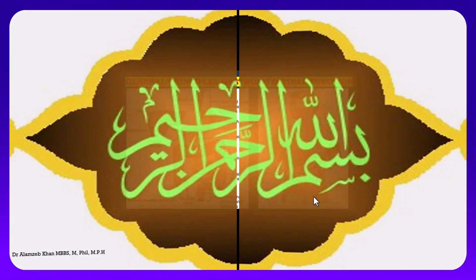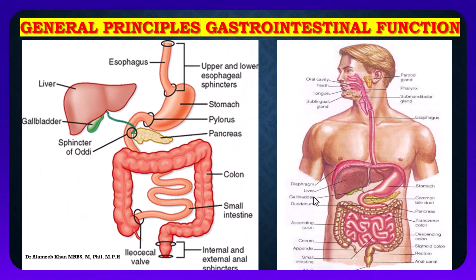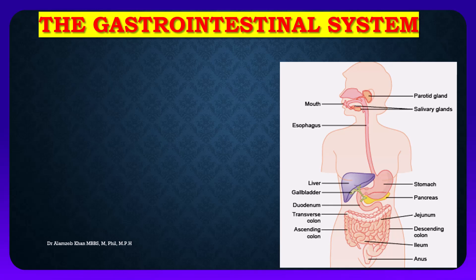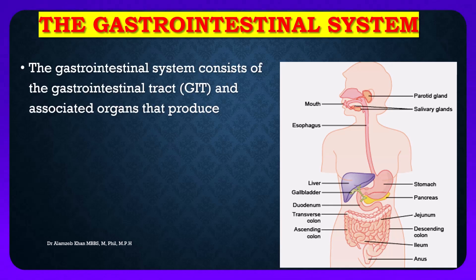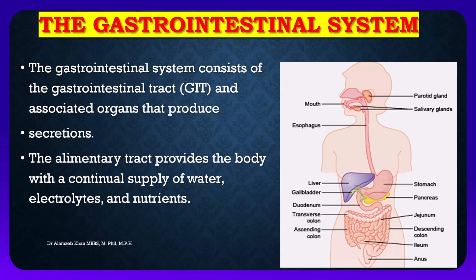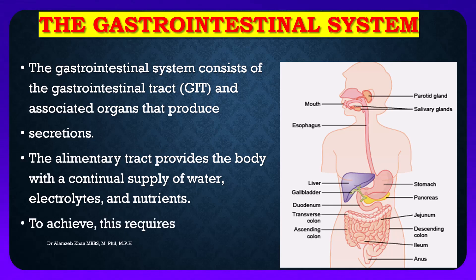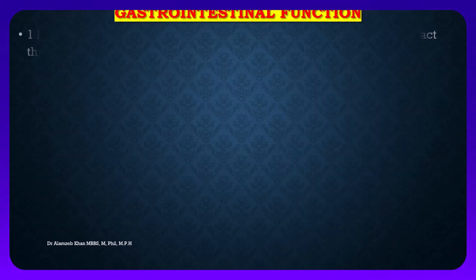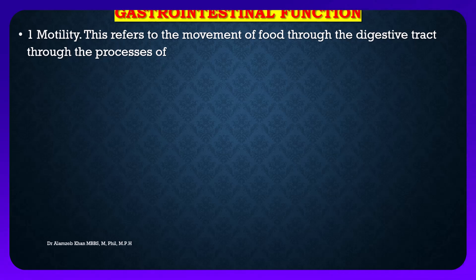Today I'm going to discuss the general principles of gastrointestinal function. The gastrointestinal system consists of the gastrointestinal tract (GIT) and associated organs that provide secretions. The alimentary tract provides the body with a continual supply of water, electrolytes, and nutrients. To achieve this, the gastrointestinal system requires several functions.